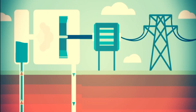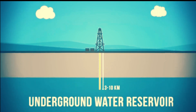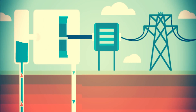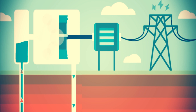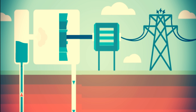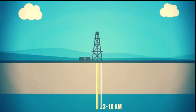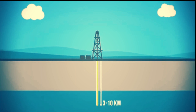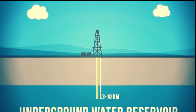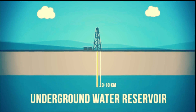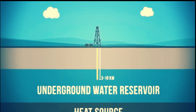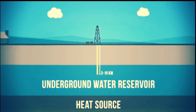People can capture geothermal energy through geothermal power plants and geothermal heat pumps. A geothermal power plant uses heat from deep inside the earth to generate steam to make electricity, which can be used for industrial as well as domestic purposes. Geothermal heat pumps tap into the heat close to the earth's surface to heat water or provide heat for buildings.